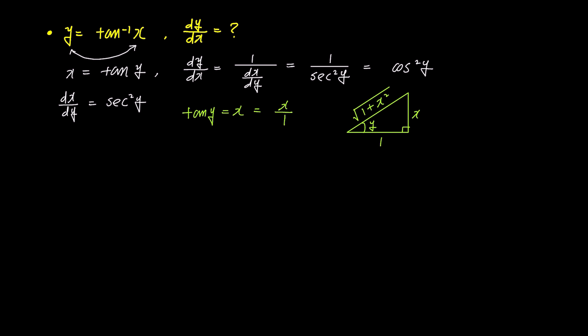Using this right-angled triangle, we can find cosine y as 1 over square root 1 plus x squared, and if it's squared, cosine squared y becomes 1 over 1 plus x squared. If we substitute this result into the dy by dx expression above, dy by dx simplifies to 1 over 1 plus x squared.